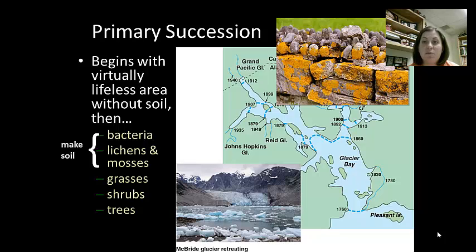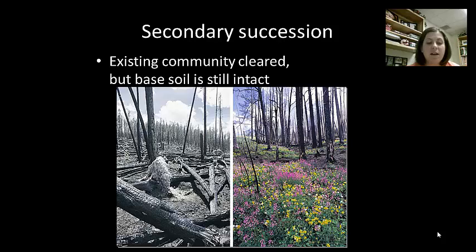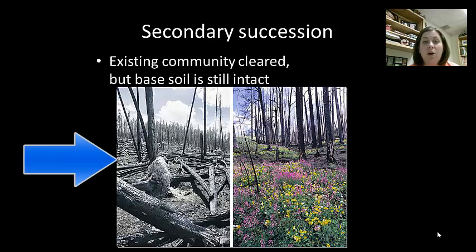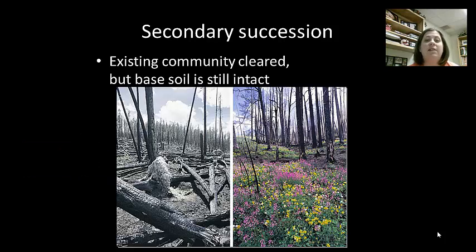Once plants are added, animals start to move in. Now secondary succession is a little different. This occurs after a community has been disrupted. This is when the community has to recover after something like a fire, or maybe plowing of fields. The soil is already present, so this type of succession does not take as long as primary succession. The rebuilding begins again with grasses, then shrubs, and then finally trees.